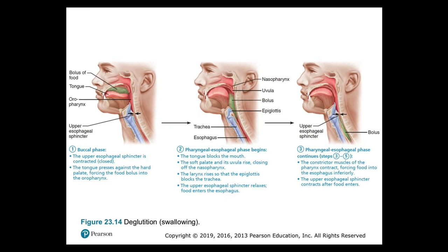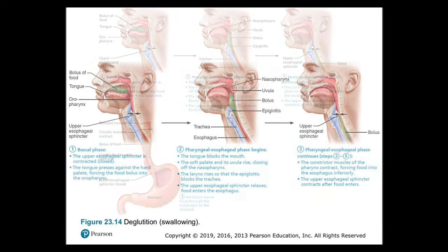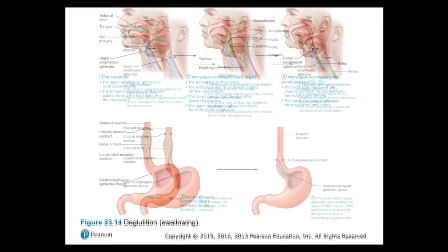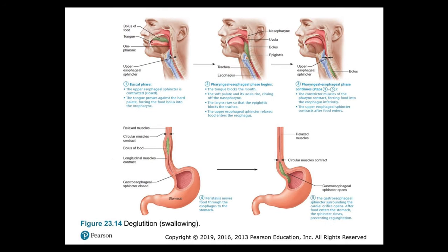Continuing the pharyngeal-esophageal phase in steps three through five: the constrictor muscles of the pharynx contract, forcing food into the esophagus inferiorly. The upper esophageal sphincter contracts after food enters. In step four, peristalsis moves food through the esophagus to the stomach — involving the contraction of circular and longitudinal muscles. In step five, the gastroesophageal sphincter surrounding the cardiac orifice opens. After food enters the stomach, the sphincter closes, preventing regurgitation.